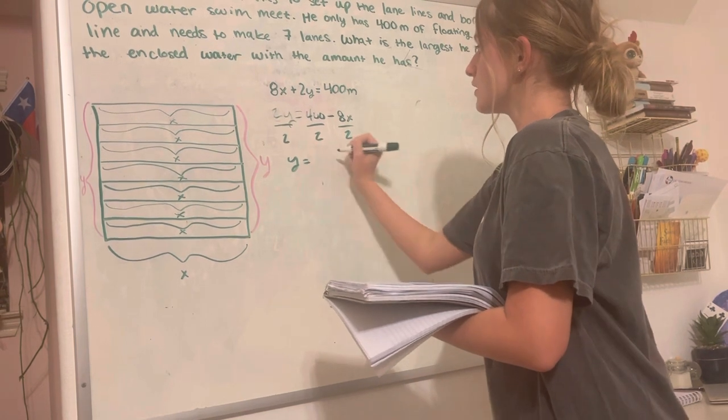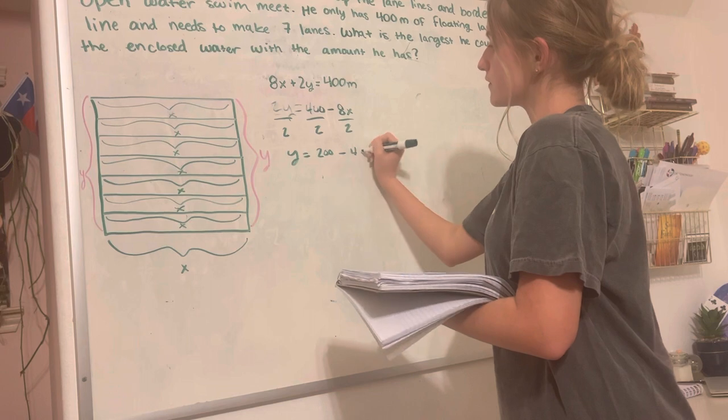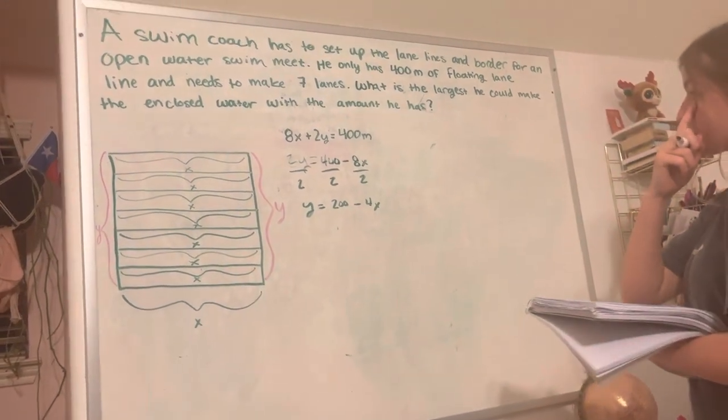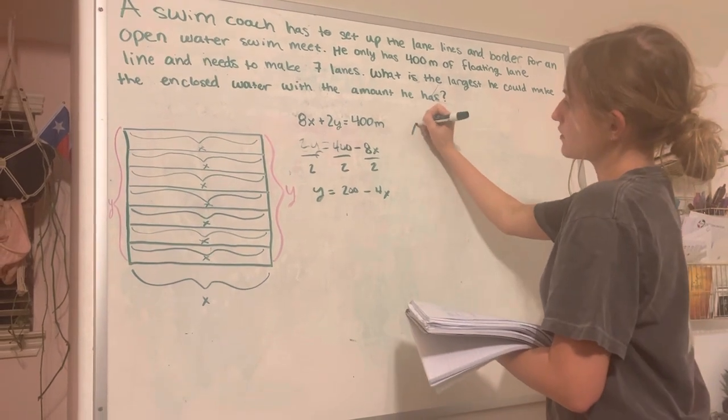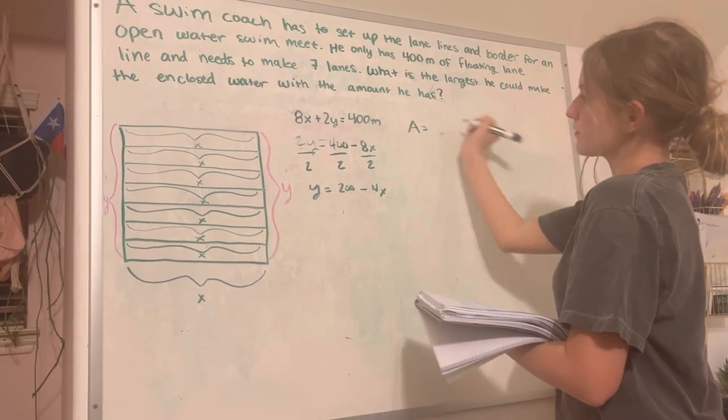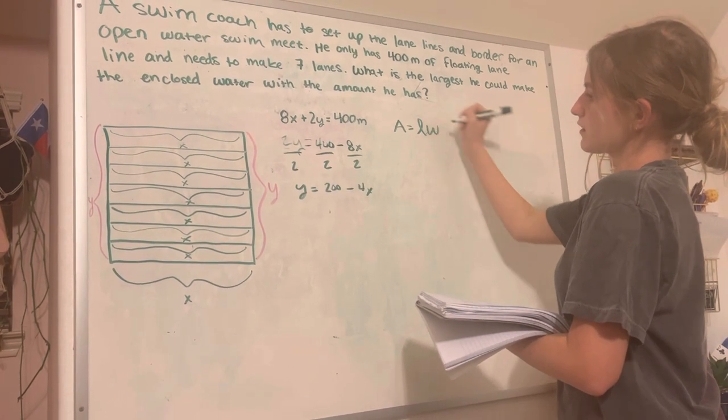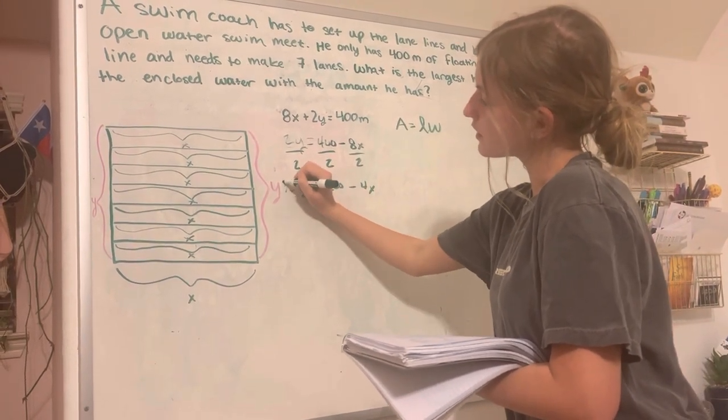y is going to be equal to 200 minus 4x. Now, since we're going to be looking for the area to find x and y, we're going to use the area formula for a rectangle. Area equals length times width.